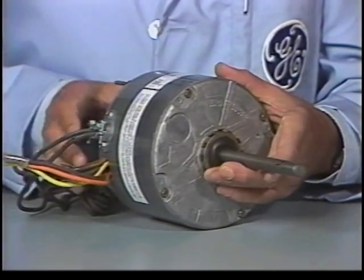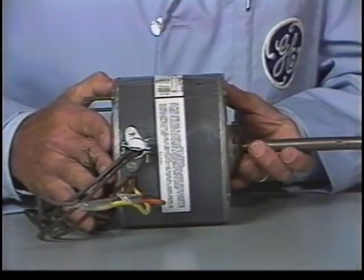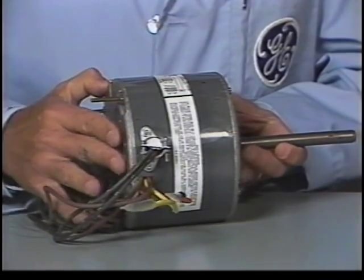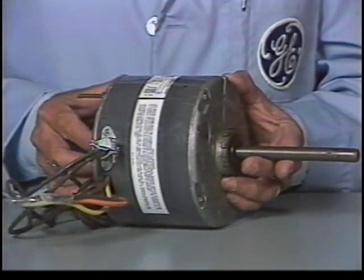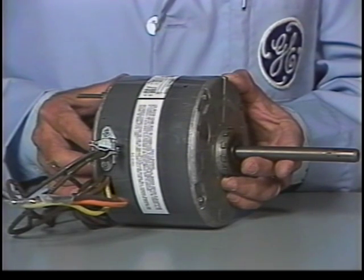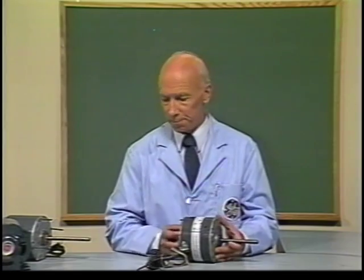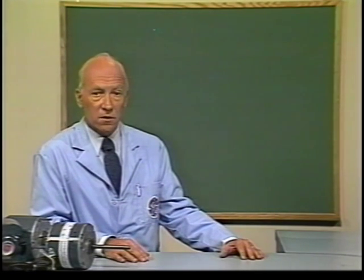The last common type of enclosure found on FHP motors is called totally enclosed non-ventilated. This enclosure protects the motor entirely from outside elements. Totally enclosed motors are normally larger than the same horsepower motors with open designs. The larger and more expensive design is needed to dissipate the heat since outside air does not reach the windings to cool them.